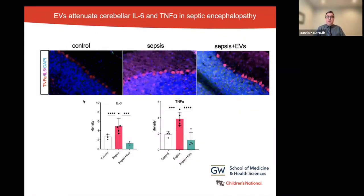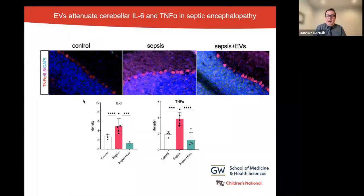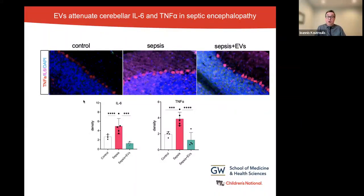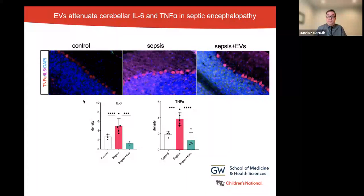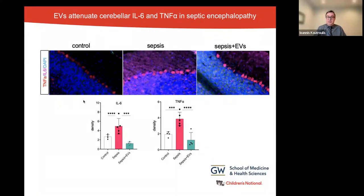In terms of inflammation, treatment of septic mice with EVs led to decreased levels of pro-inflammatory cytokines IL-6 and TNF-alpha, close to control levels. TNF-alpha, stained red-pink, is mainly expressed in the Purkinje neurons, whereas IL-6, shown in purple, is diffusely expressed in the internal granule layer. Remember that IL-6 has been implicated in the pathophysiology of many infections including COVID-19, as well as other immune and autoimmune conditions. It has also been used as a biomarker for severity or relapse of disease, and anti-IL-6 antibodies have been developed for use in diseases caused by immune dysregulation.